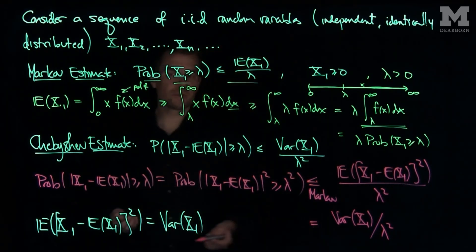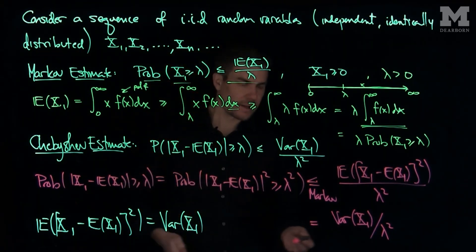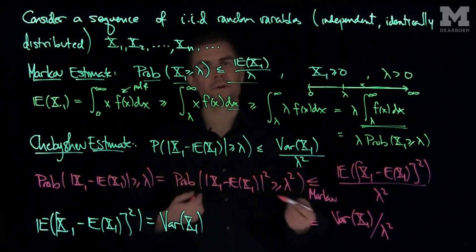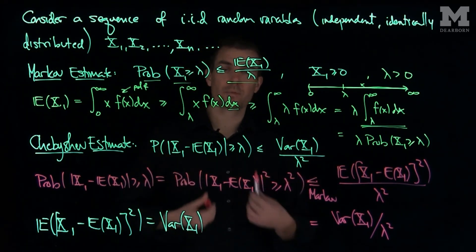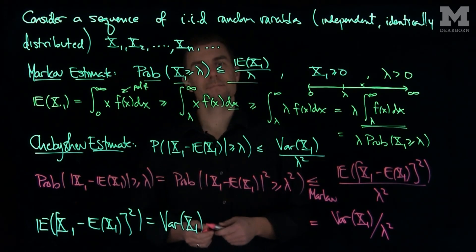And we'll see in future videos that this Chebyshev estimate is the essential feature in proving the weak law of large numbers, and that is a fundamental component in proving the strong law of large numbers. Thank you very much.